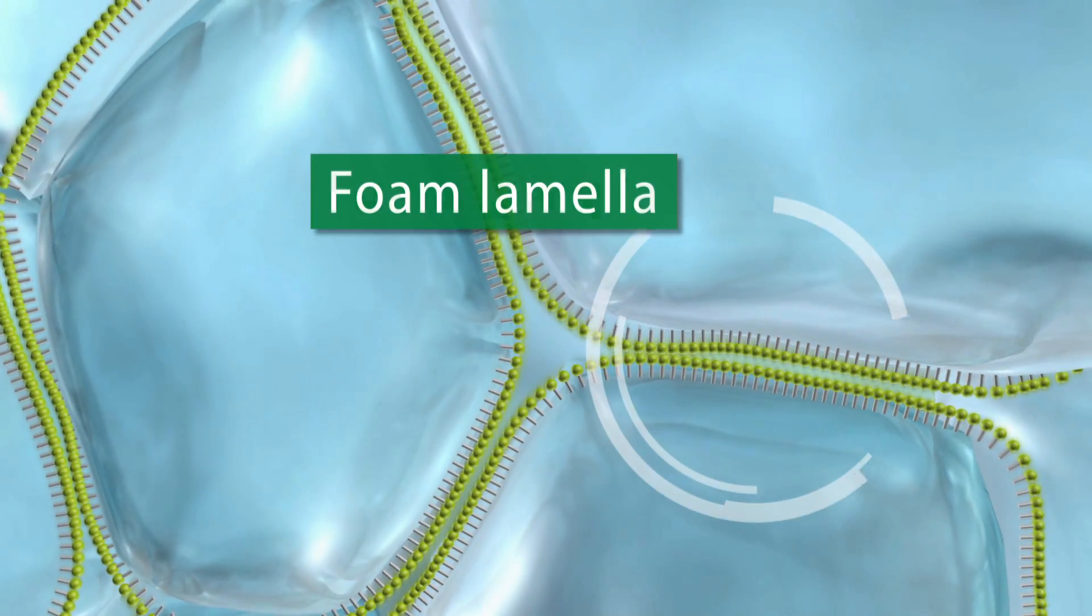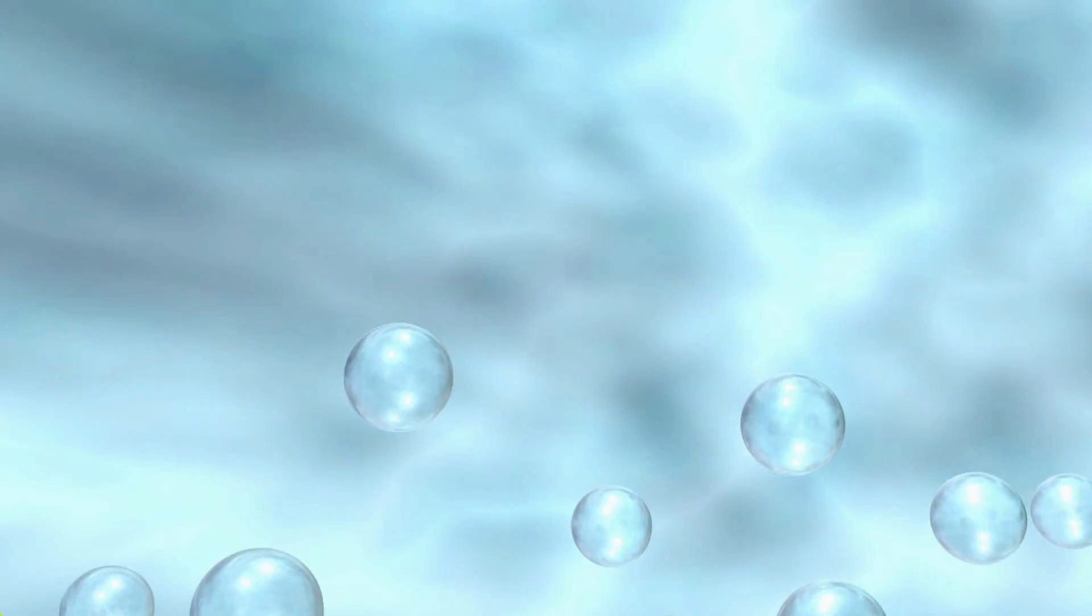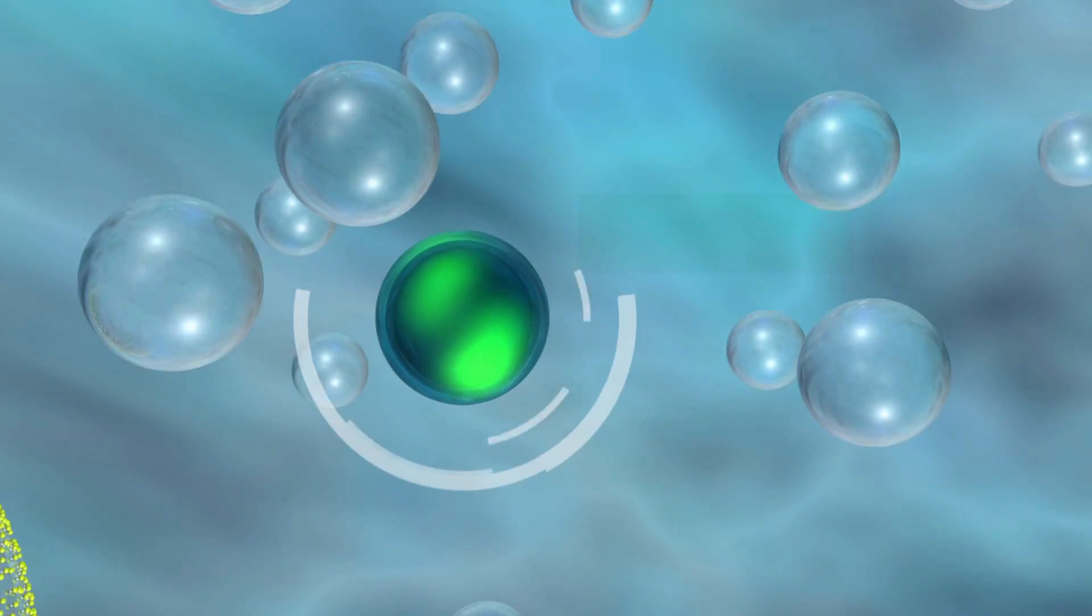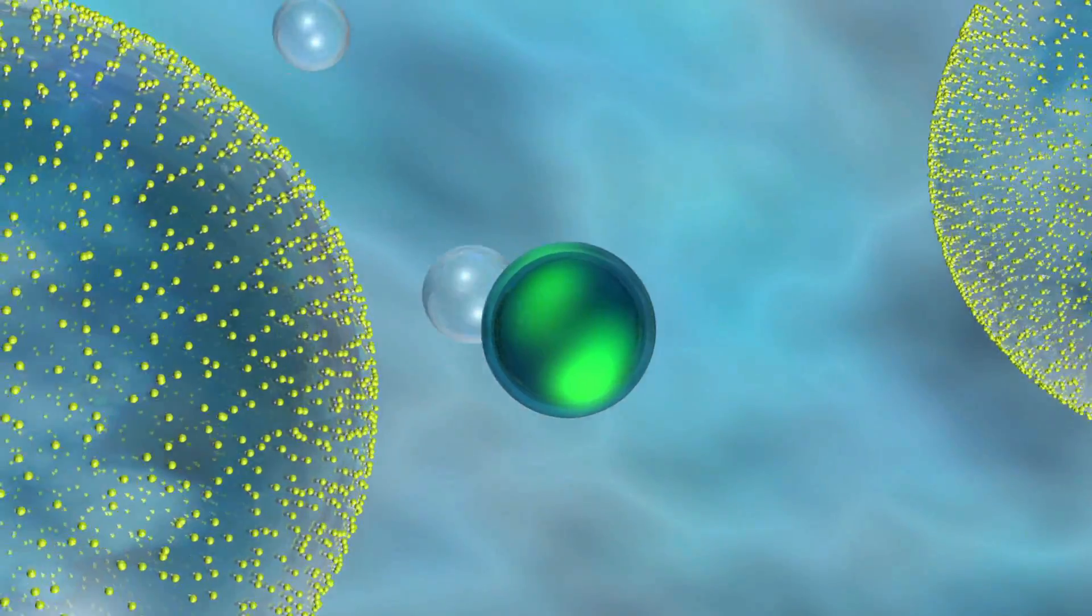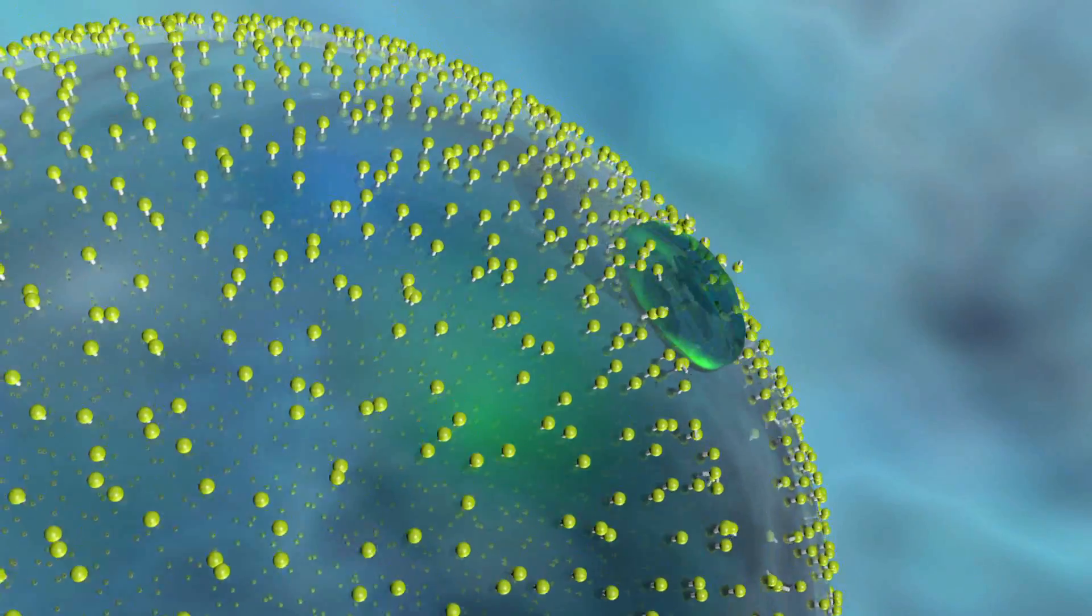A defoamer's point of action is the interface from air and liquid. The working mechanism of a defoamer can be characterized by three steps. Due to its highly surface active properties, the defoamer droplet has a high tendency to migrate to the air-water surfactant interface.